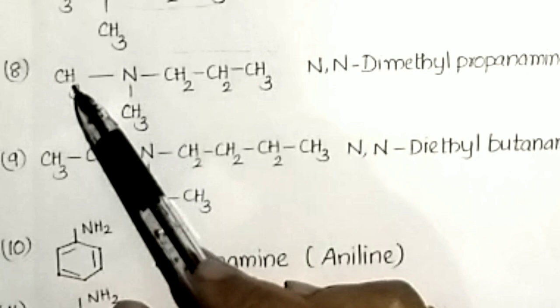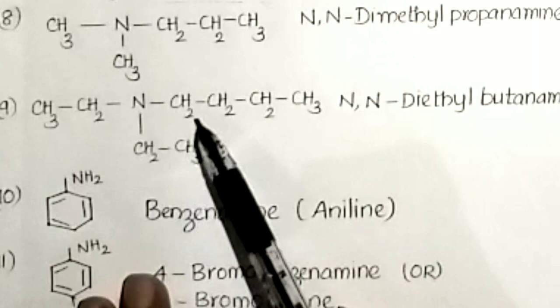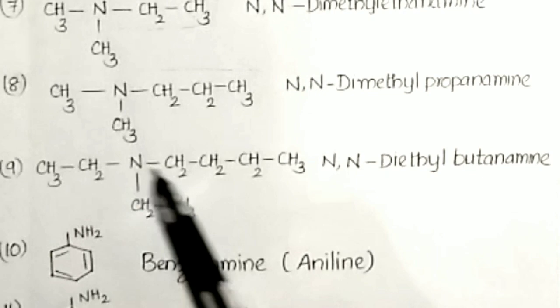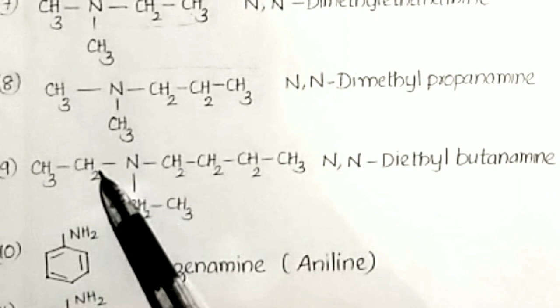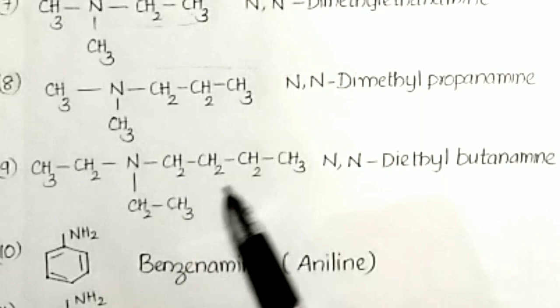For the next compound where nitrogen has ethyl groups and a chain of 1,2,3,4 carbon atoms: the longest chain is four carbons — butanamine. The other ethyl groups become substituents, giving N,N-diethyl butanamine.